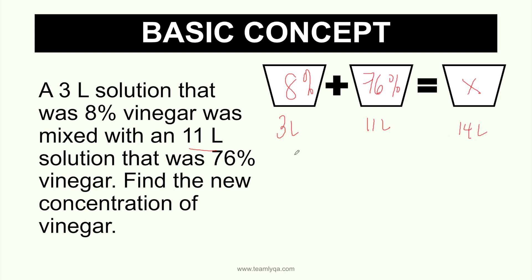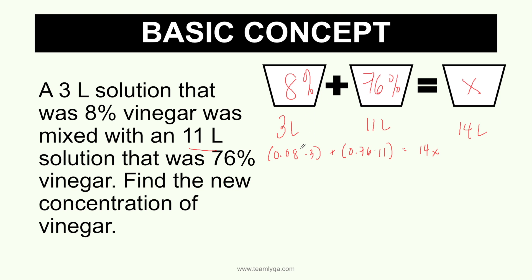Now let's solve this. The traditional method is to write it as decimals: 0.08 times 3 plus 0.76 times 11 equals 14x. But I prefer not to use decimals — I just put the percent sign at the end of the answer, so I don't need to deal with decimals, especially when there are multiple decimal places. So I just put 8 times 3 plus 76 times 11, which is easier on the eyes. It's equal to 14x. So 8 times 3 is 24, plus 76 times 11.